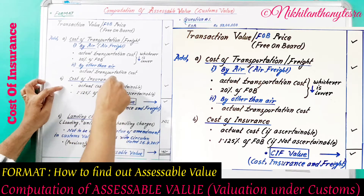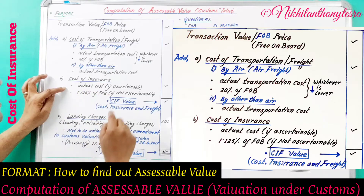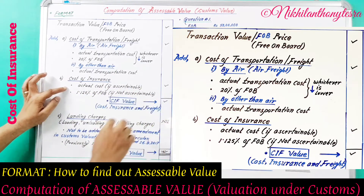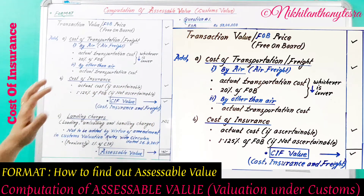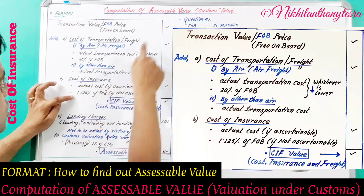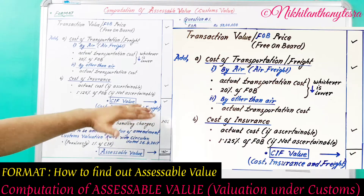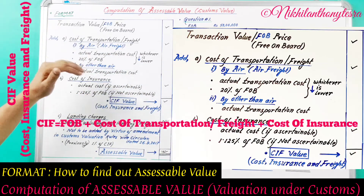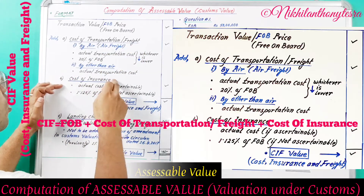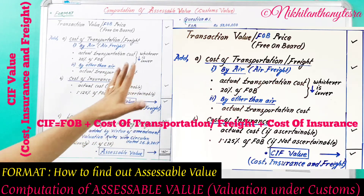For cost of insurance: if the insurance cost is ascertainable, then we consider the actual cost. If the cost of insurance is not ascertainable or not given, then 1.125% of FOB is to be considered as the cost of insurance. Adding FOB price, cost of transportation, and cost of insurance gives us CIF — that is Cost, Insurance, and Freight value.